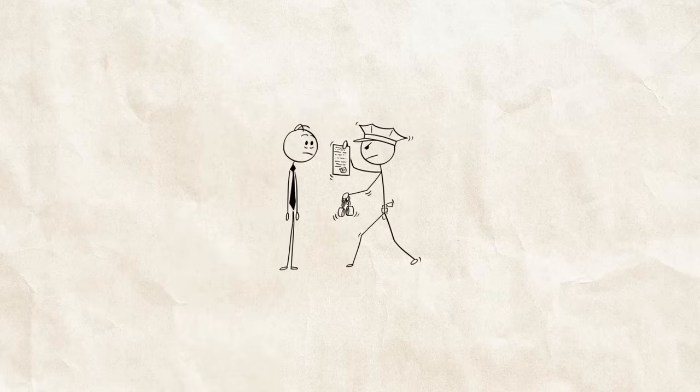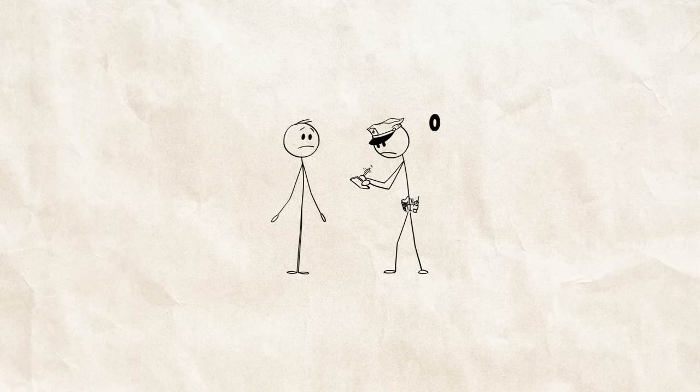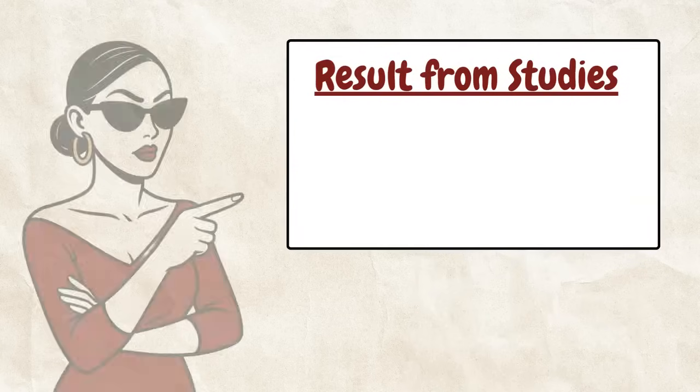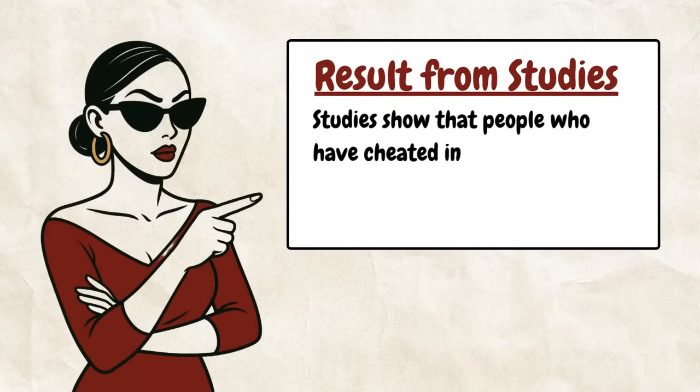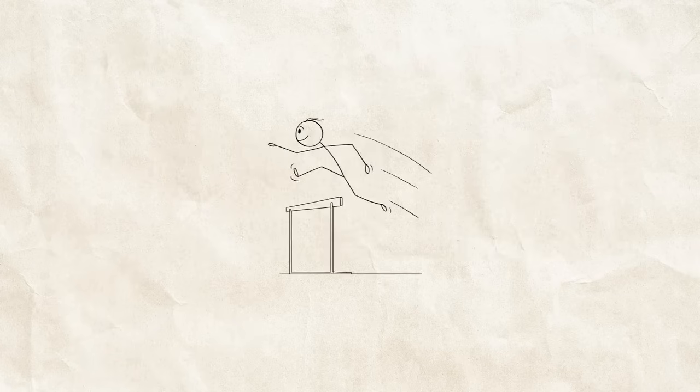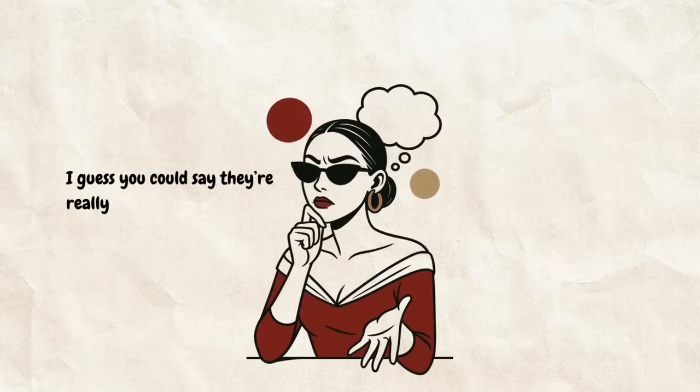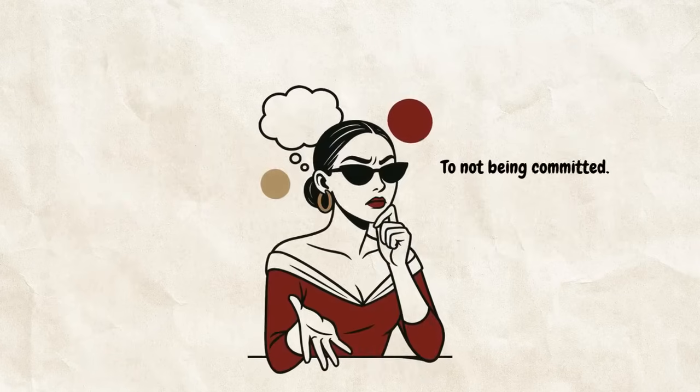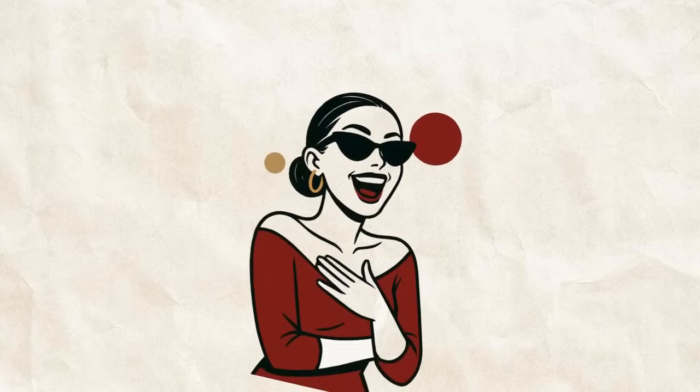By the way, cheaters tend to be repeat offenders. The saying, once a cheater, always a cheater, has some scientific backing. Studies show that people who have cheated in one relationship are three times more likely to cheat in their next relationship. It's like they've crossed a moral boundary, and it's easier to cross it again. I guess you could say they're really committed to not being committed. Fuck, that was bad, but I couldn't resist.